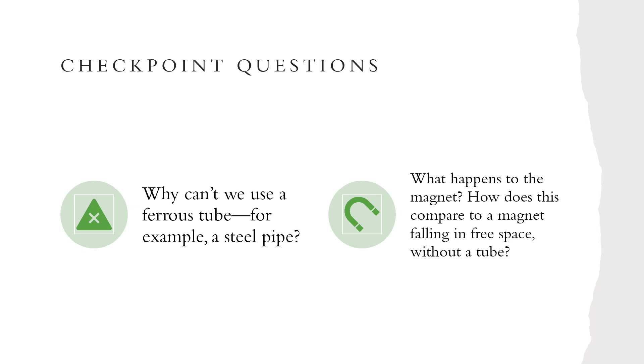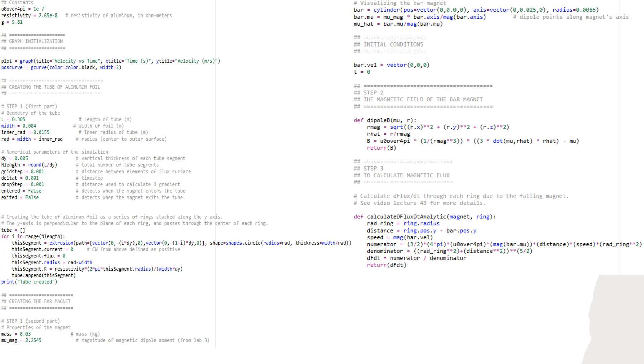What happens to the magnet? How does this compare to a magnet falling in free space without a tube? The magnet falls slower through the tube than in free space because there is an upward magnetic force on the magnet caused by the induced current in the tube.